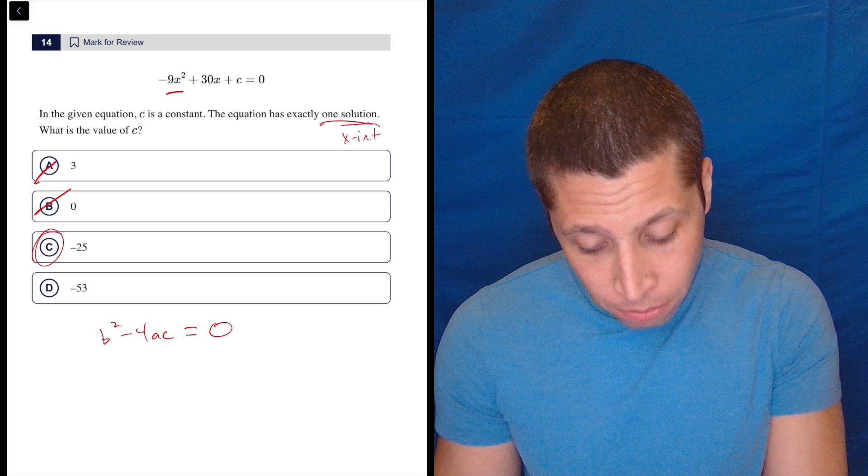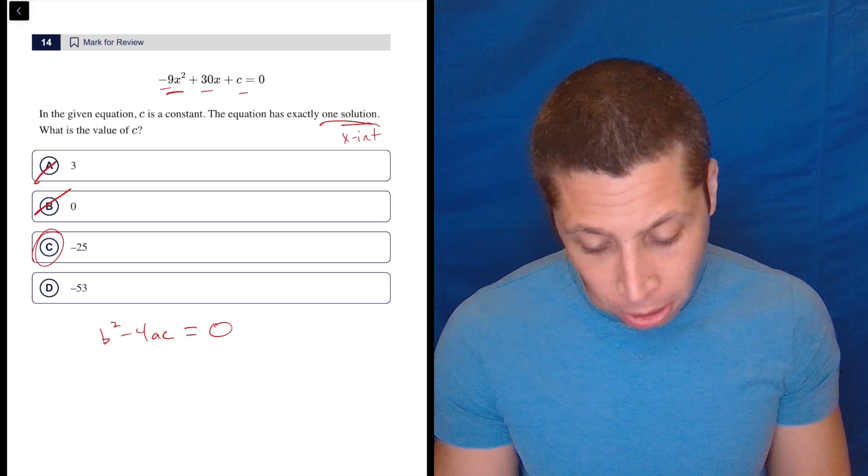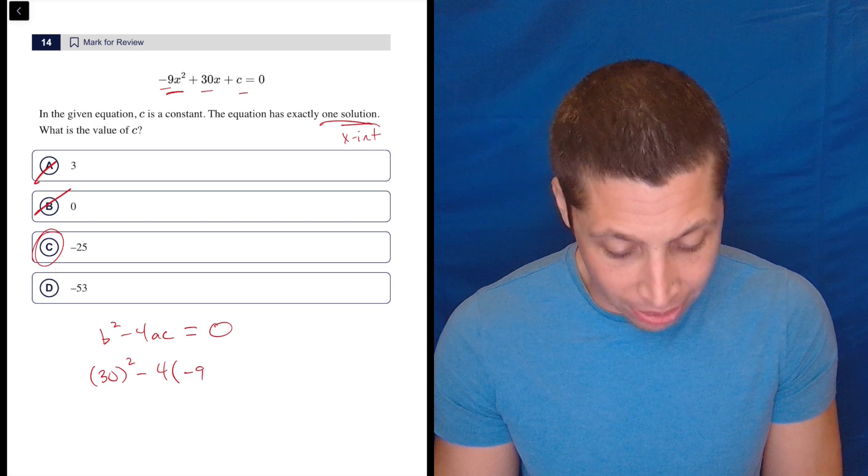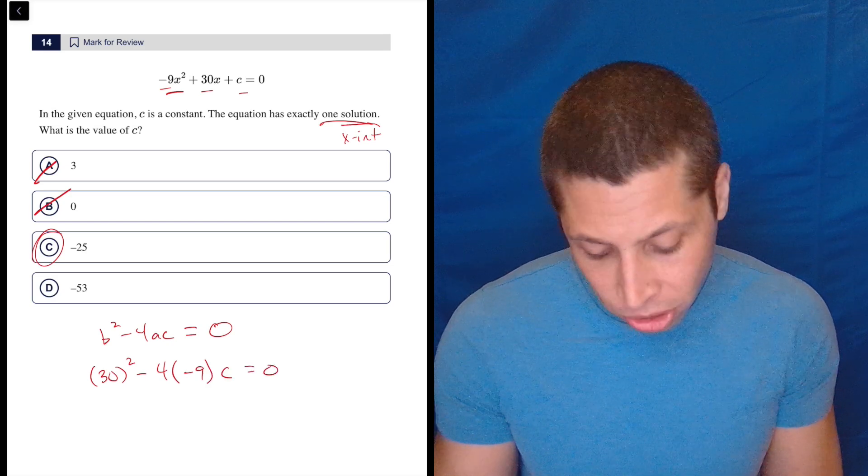So now we just plug things in for the A, B, and C terms. So the B term is 30. So 30 squared minus 4. The A term is negative 9. And C is C. So we're just going to solve for C here.